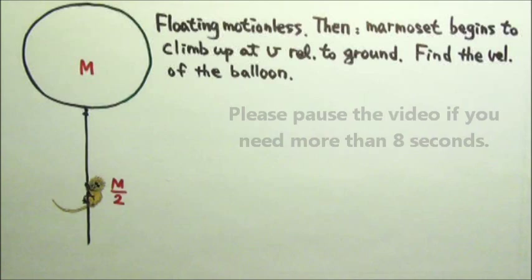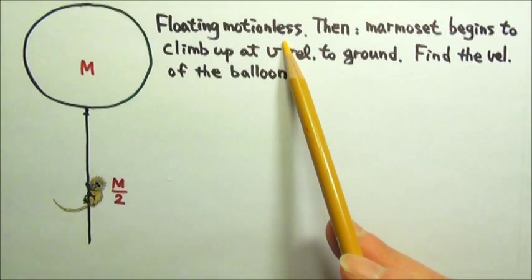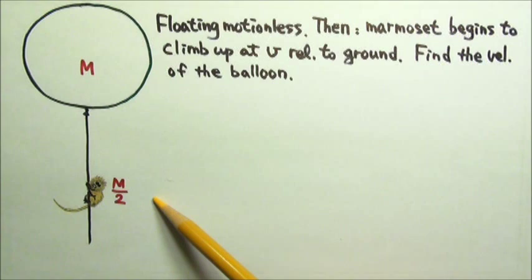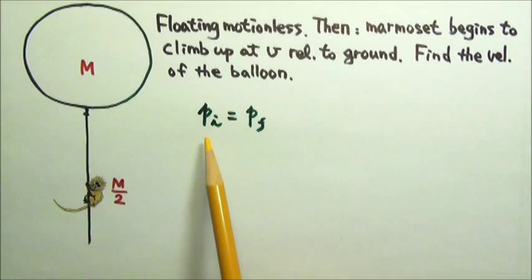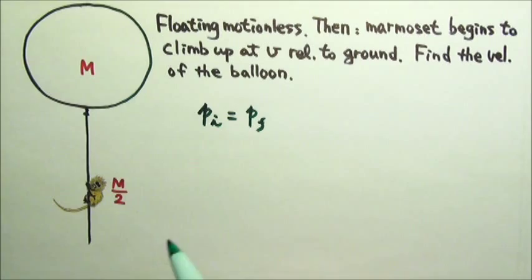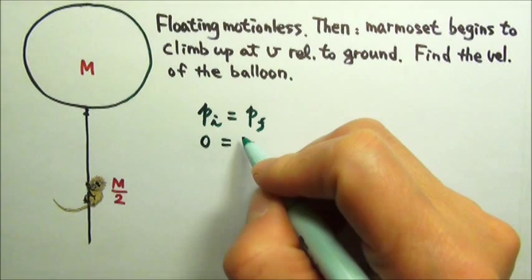The balloon-rope-marmoset system floating motionless initially tells us that the net force on the whole system is zero. In this case, it means that the gravitational force is canceled by the buoyant force. Since the net force on the whole system is zero, the system's momentum is conserved. Initially, nothing is moving, so the initial momentum is zero.